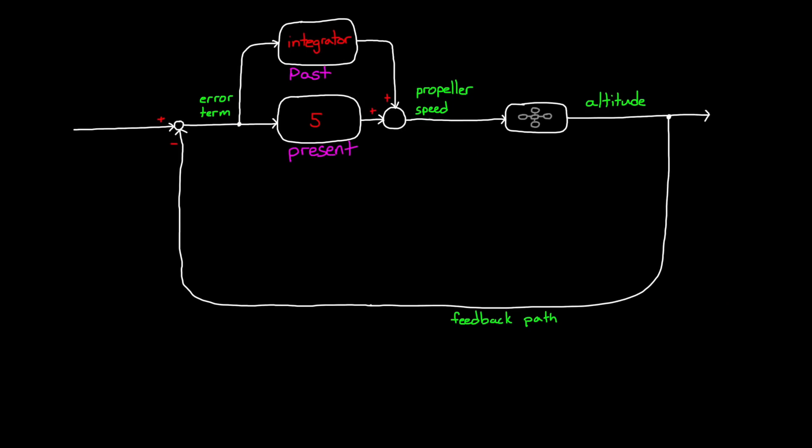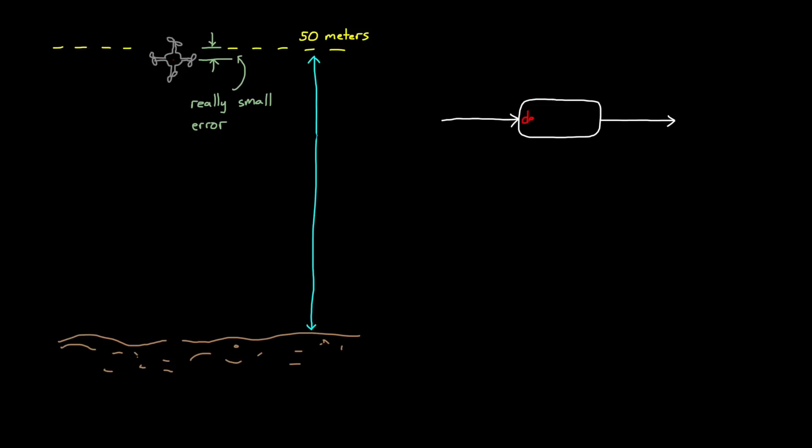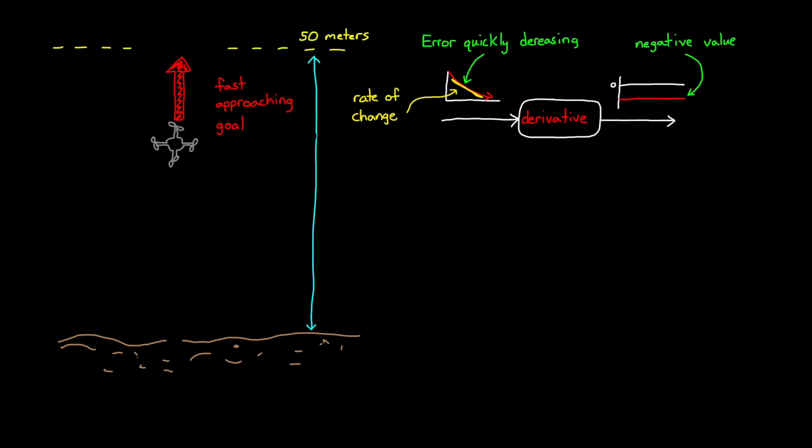Luckily, there is a simple way around this problem, and that is by adding a path to our controller that can predict the future and respond to how fast we're closing in on our goal. And we do that with a derivative. A derivative produces a measure of the rate of change of the error. That is, how fast the error is growing or shrinking. For example, if our drone is rising quickly and fast approaching our goal, this means that the error is quickly decreasing. That decreasing error has a negative rate of change, which will produce a negative value through our derivative path. That negative value will be added to our controller's output, therefore lowering the propeller speed. Basically, our controller is using changing error to determine that we are closing in on our goal way too fast, and then prematurely slowing down the propeller speed, preventing the drone from overshooting.